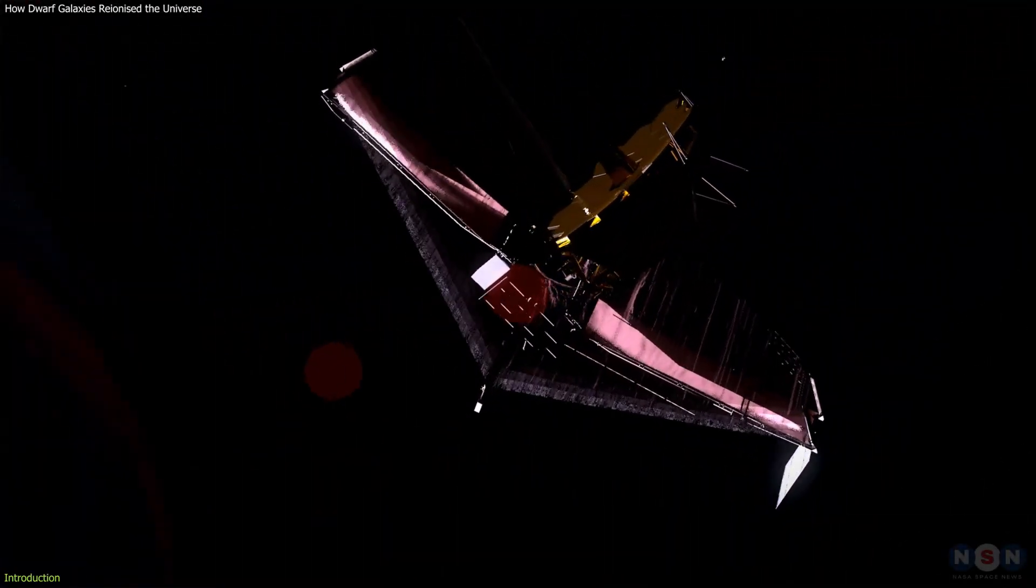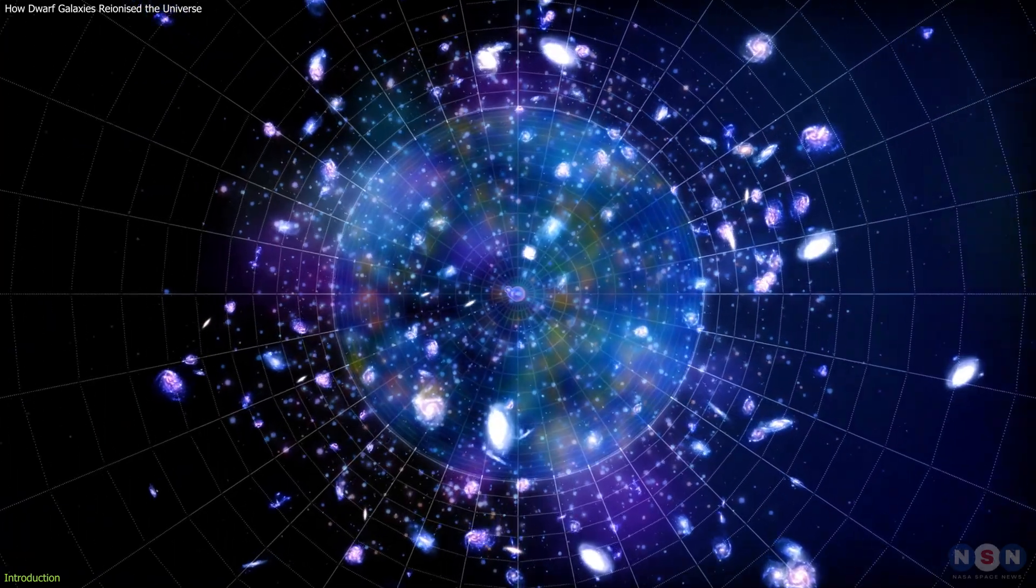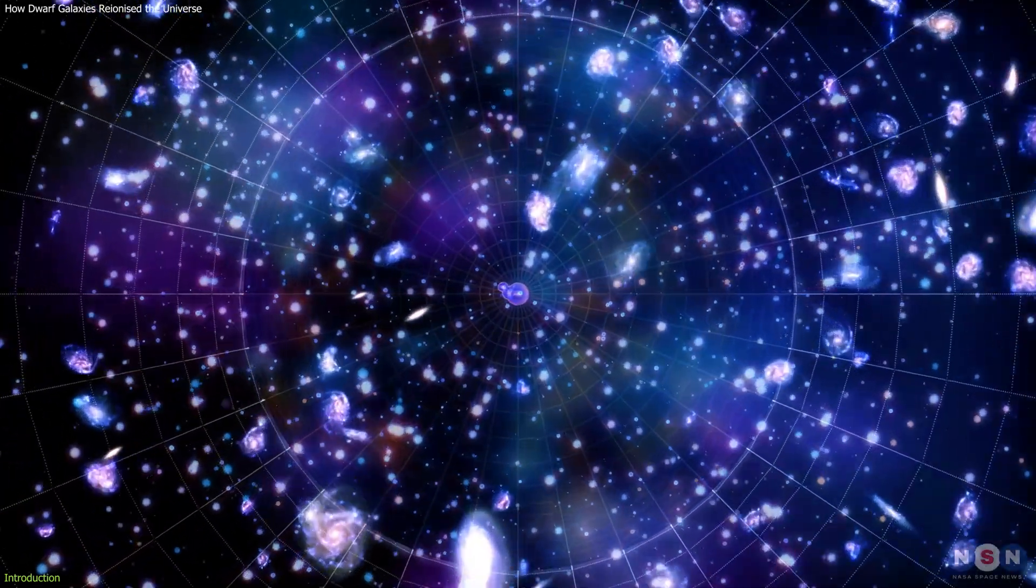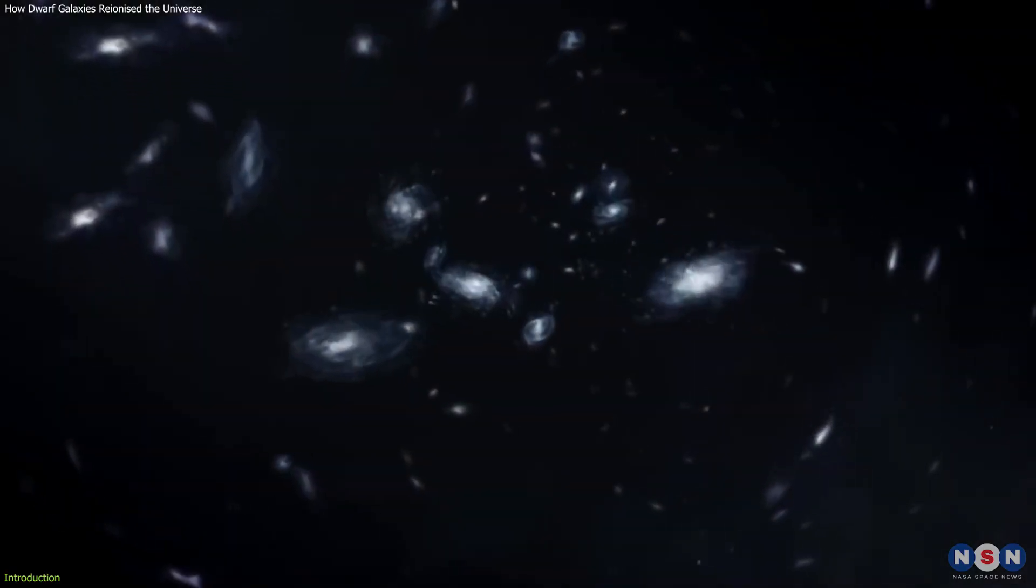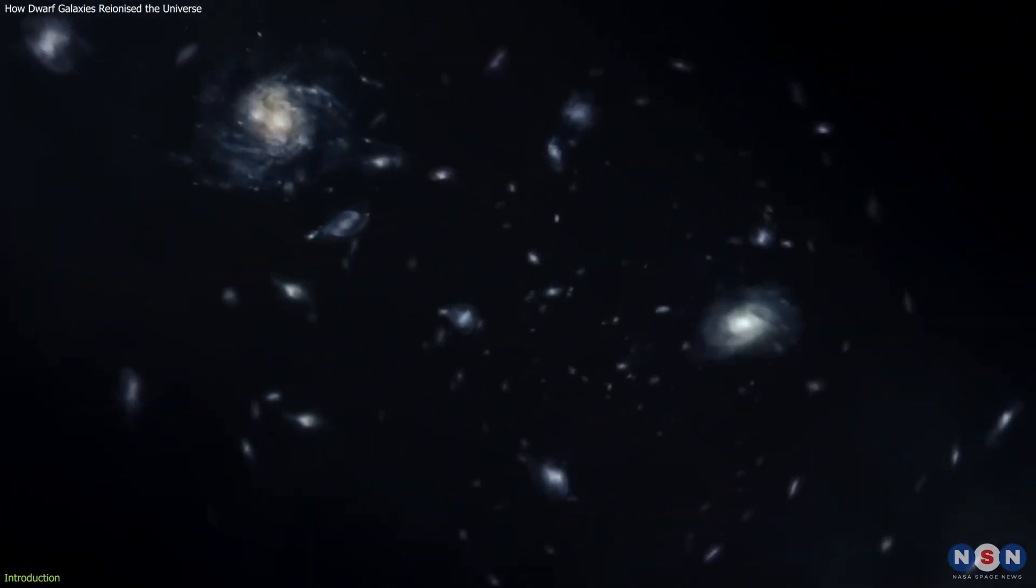NASA's James Webb Space Telescope has just revealed that the most powerful source of light in the early universe was not the giant stars or massive galaxies, but the tiny, faint, and numerous dwarf galaxies.